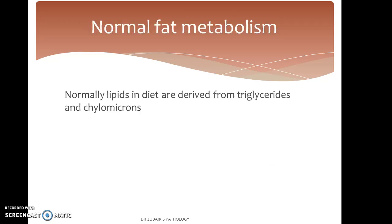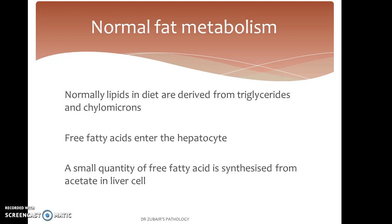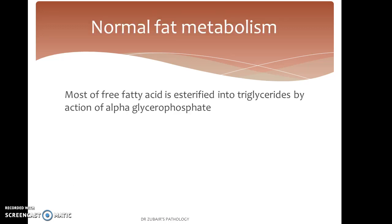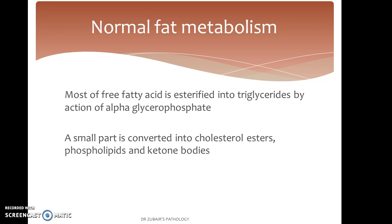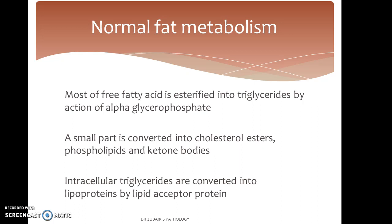We should first understand normal fat metabolism. Normally, lipids in the diet are derived from triglycerides and chylomicrons. Free fatty acids enter the hepatocyte. A small quantity of free fatty acid is synthesized from acetate in the liver cell. Most free fatty acid is esterified into triglycerides by the action of alpha-glycerophosphate. A small part is converted into cholesterol esters, phospholipids, and ketone bodies. Intracellular triglycerides are converted into lipoproteins by lipid acceptor proteins.